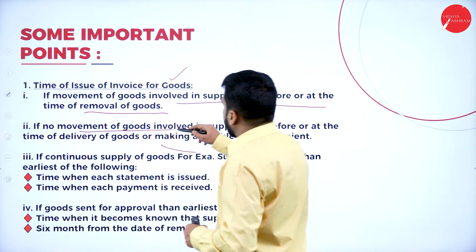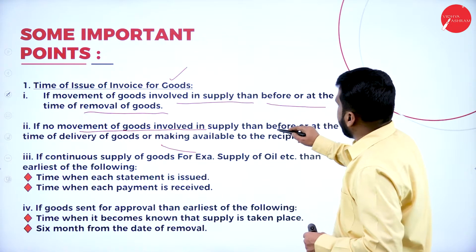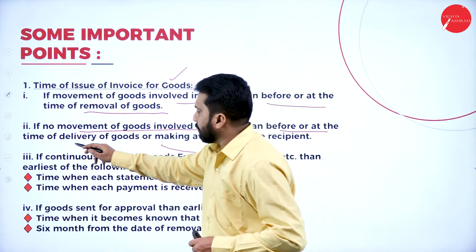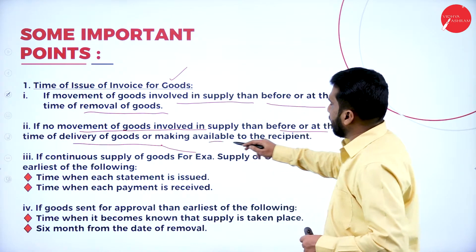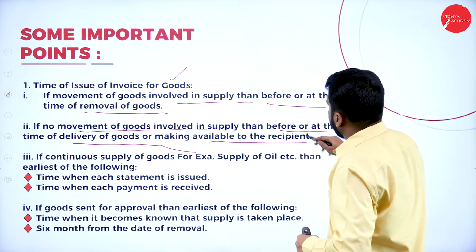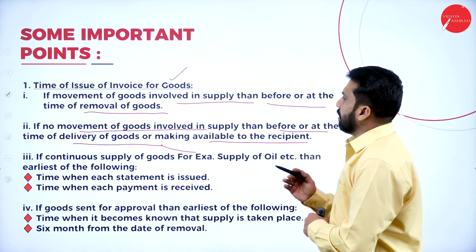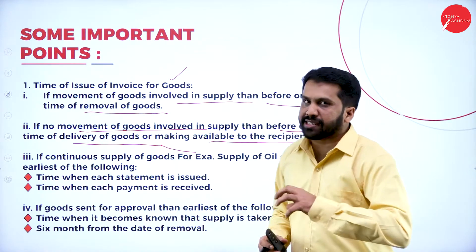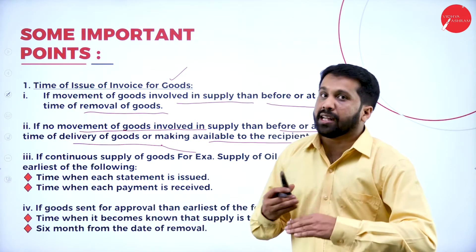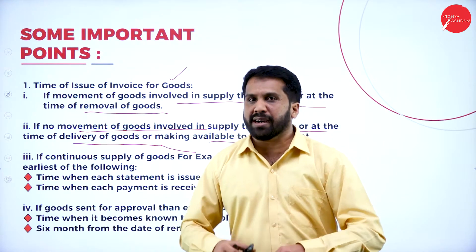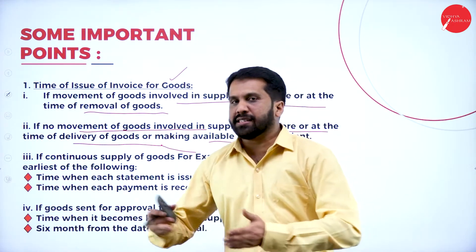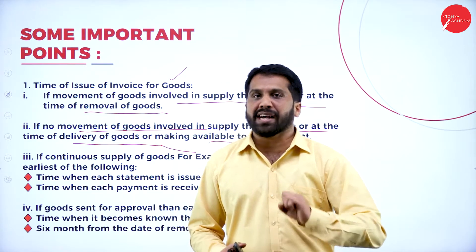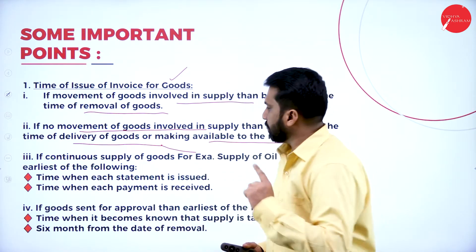Second: if no movement of goods is involved in supply, then the invoice must be issued before or at the time of delivery of goods or making them available to the recipient. Sometimes movement will be there, sometimes it won't. For example, if you are in Mysore and the other person is right next to you, there is no transportation involved.